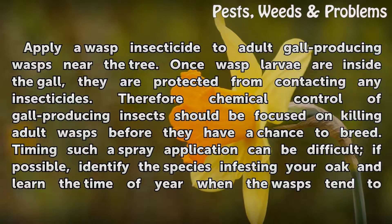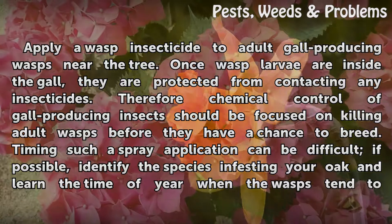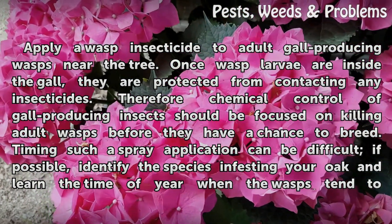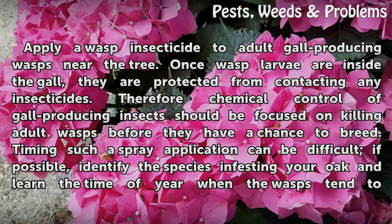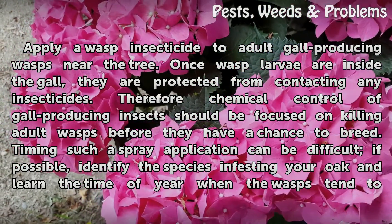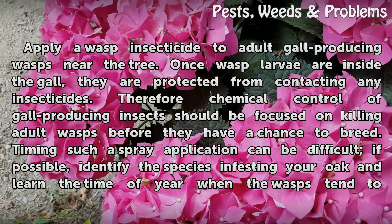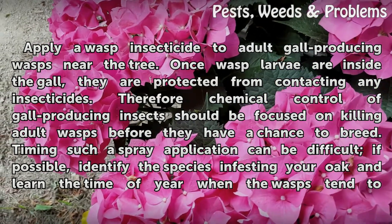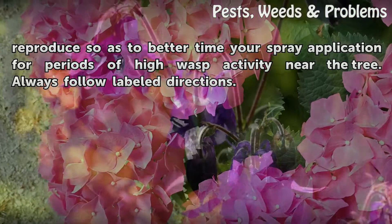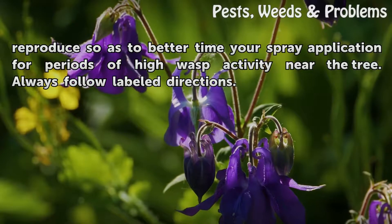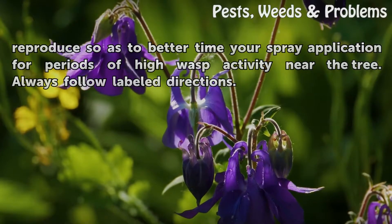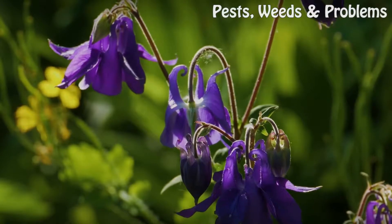Apply a wasp insecticide to adult gall-producing wasps near the tree. Once wasp larvae are inside the gall, they are protected from contacting any insecticides. Therefore chemical control of gall-producing insects should be focused on killing adult wasps before they have a chance to breed. Timing such a spray application can be difficult. Identify the species infesting your oak and learn the time of year when the wasps tend to reproduce, so as to better time your spray application for periods of high wasp activity near the tree. Always follow label directions.